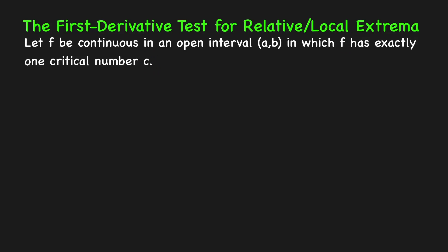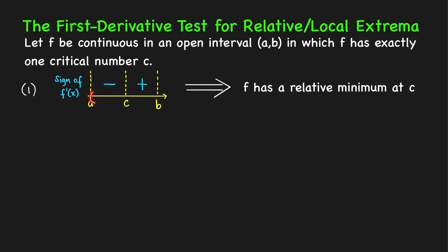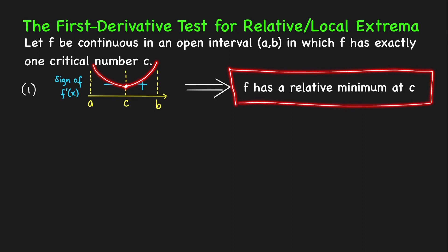Let's look at different cases. First case: suppose we have a sign chart where the derivative is negative on the open interval (a, c) and positive on the open interval (c, b). This means the function f is decreasing on the left of c and increasing on the right of c. Therefore, we have a relative minimum at x equals c — f has a relative or local minimum at c.